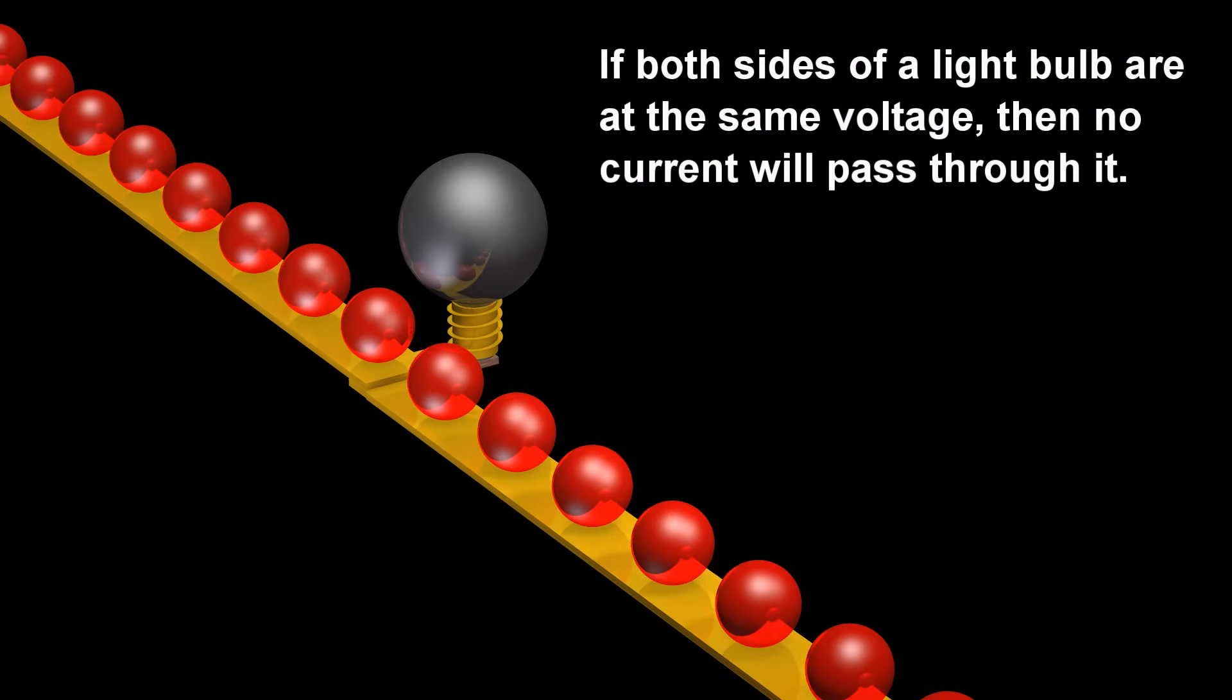If both sides of a light bulb are at the same voltage, then no current will pass through it.